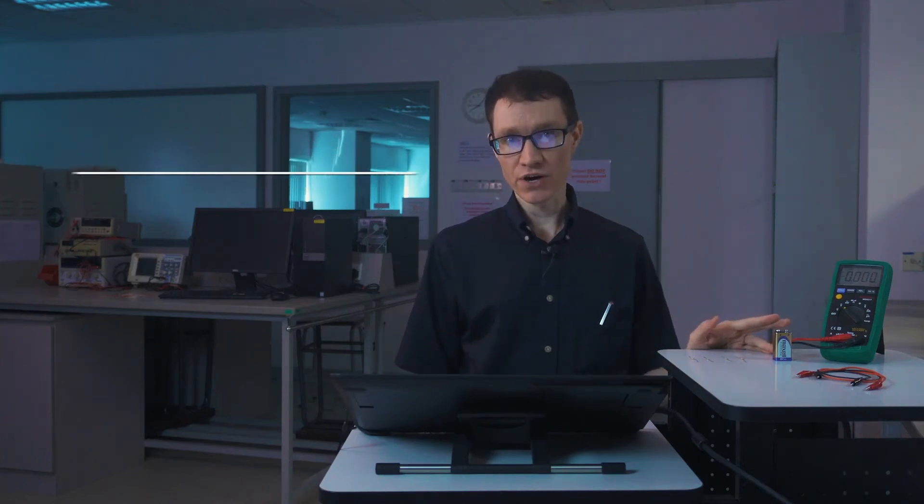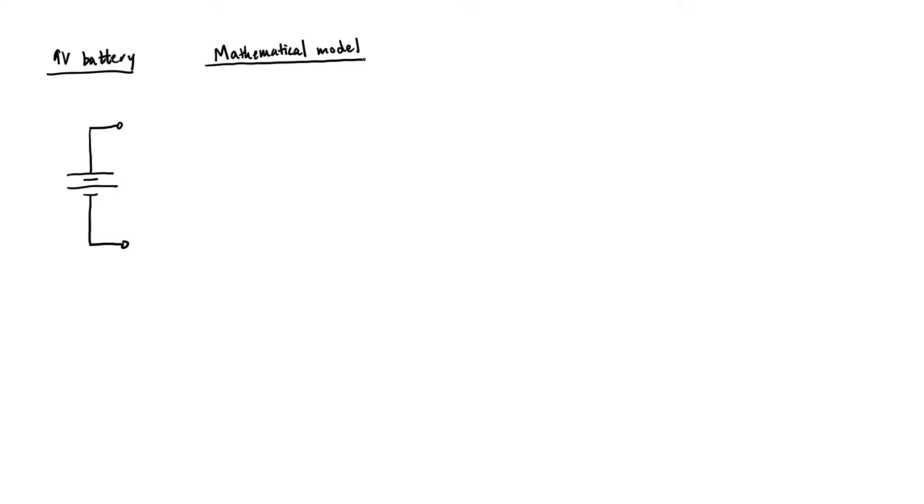I have a 9 volt battery right here, and what we're going to do in this video is create a mathematical model of this battery. Specifically, we're going to model it as a Thevenin equivalent source in series with a Thevenin equivalent resistor. The question is, how are we going to do it?